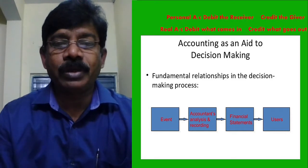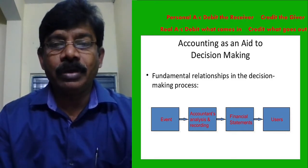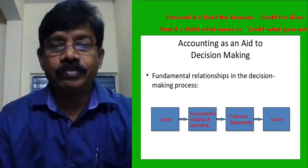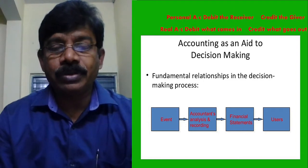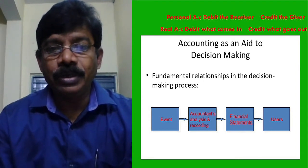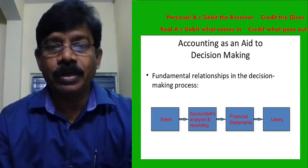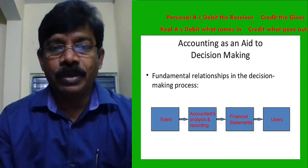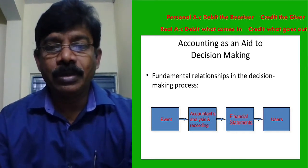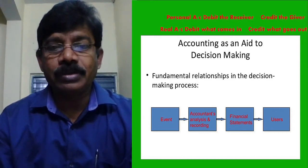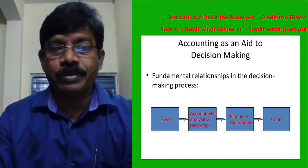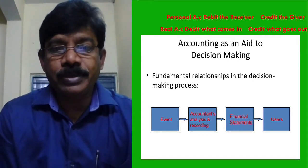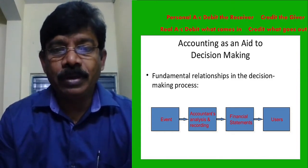The process of accounting starts with events that we call transactions. The accountant will analyze the transaction, convert it into a journal entry, and record that journal entry in the book of original entry, called the day book. Later, he will post into the ledger account, then update the ledger balance in the trial balance. Next, he will prepare financial statements and submit them to users. The first users of financial statements are the owners of the organization. This process helps in decision making.